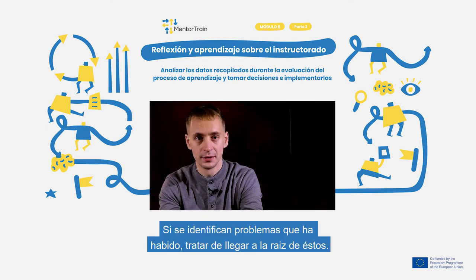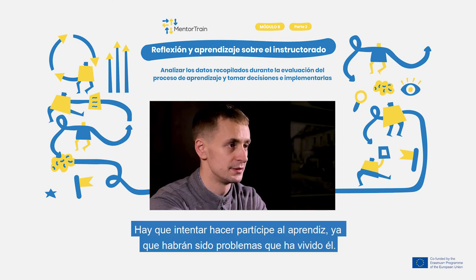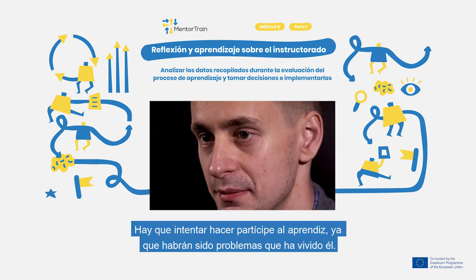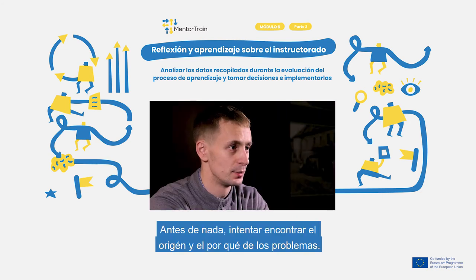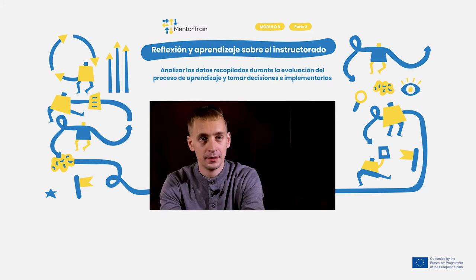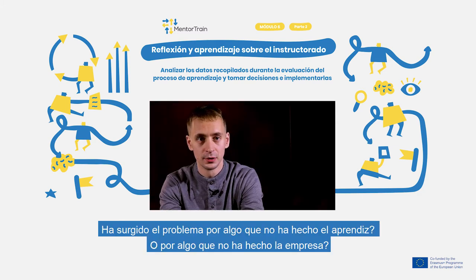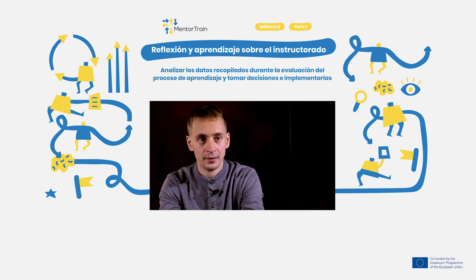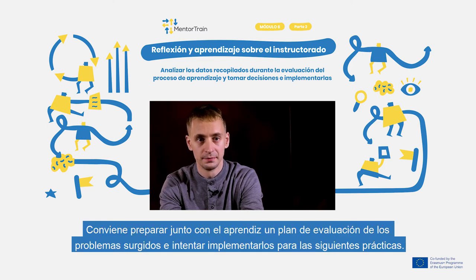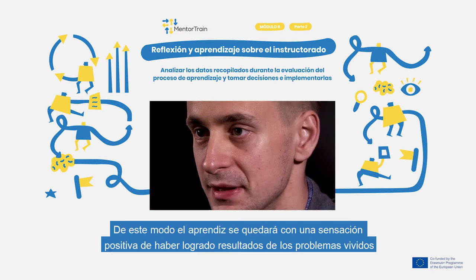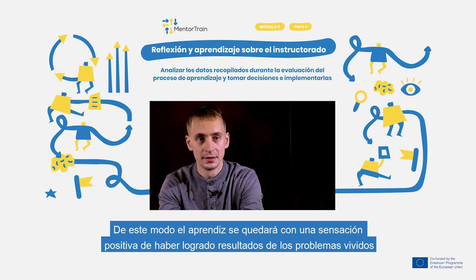If you find out problems, try to analyze where they arose from. Involve the apprentice as much as possible since these are the problems that he or she experienced. First try to understand where the problems came from and why — whether they started because something was not done by the apprentice or by the organization. Make a plan with the apprentice on how to solve it and try to implement it the next time. This way the apprentice has a positive feeling and a sense of achievement in the end, even though there were problems.